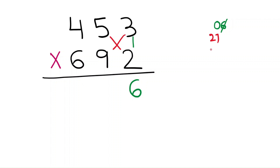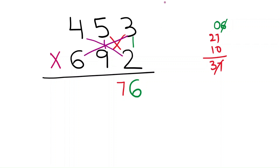9 times 3 is 27, 5 times 2 is 10 — this is 37. Cross 7 and write it in the final answer. Now do the multiplication for hundreds, ones, and tens: 6 times 3 is 18, 4 times 2 is 8, and 5 times 9 is 45. Add all these numbers — it will be 74.